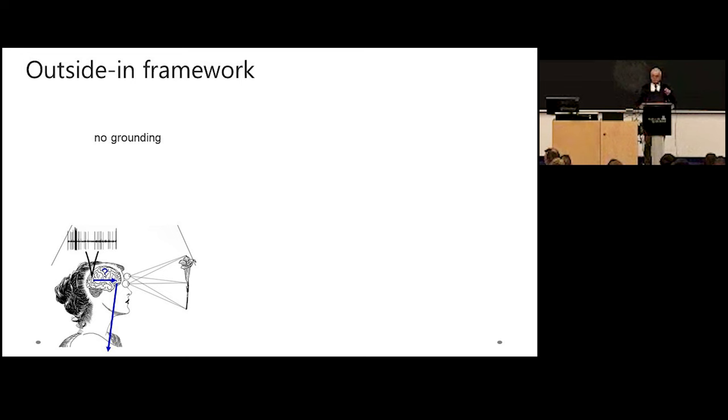Neurons in V1 or even in the face region have no clue, absolutely no clue what they are seeing. All they know is that there are action potentials coming from upstream and they integrate the action potentials. The only way how neurons can know something or how a biological organism can know something is to compare it with something else. We need a second opinion.